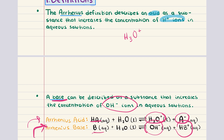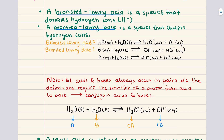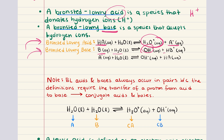Let's discuss the Bronsted-Lowry definition of acids and bases. This definition expands upon the limitations of the Arrhenius concept and provides a more versatile framework for understanding acid-base chemistry. A Bronsted-Lowry acid is a species that donates a proton, H+, while a Bronsted-Lowry base is a species that accepts a proton. This definition is broader than the Arrhenius definition. HA donates a proton to water, forming the hydronium ion and the conjugate base. B accepts a proton from water, forming hydroxide ions and the conjugate acid.